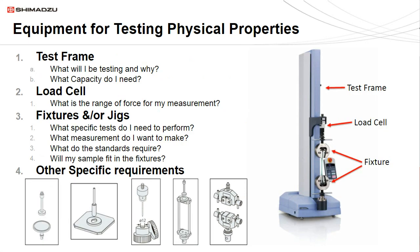Now that we have seen various examples of physical strength testing, you may ask yourself: what equipment do I need to conduct these types of tests? The three main components are a universal test frame, load cell, and fixtures or jigs. The test frame is the main component — it applies the load to the sample, controls the test speed, and measures the displacement. The load cell measures the force applied to the sample, and the fixtures translate the load to the sample.